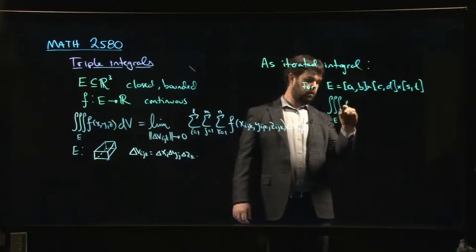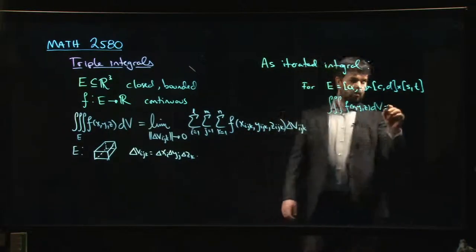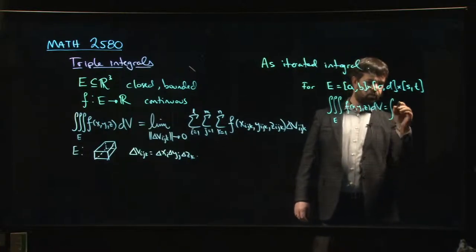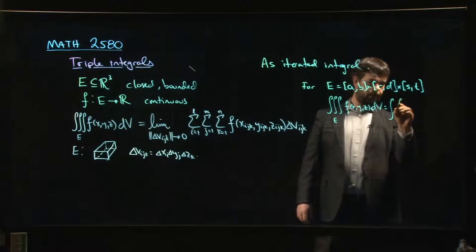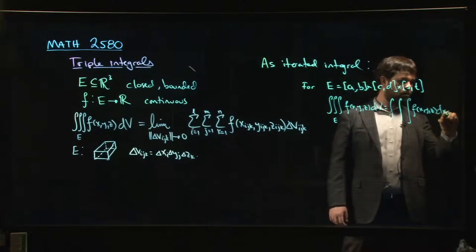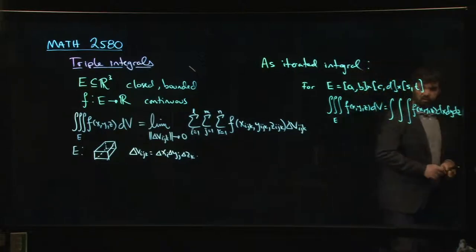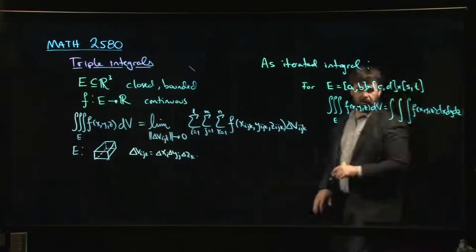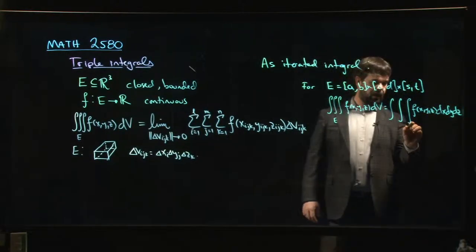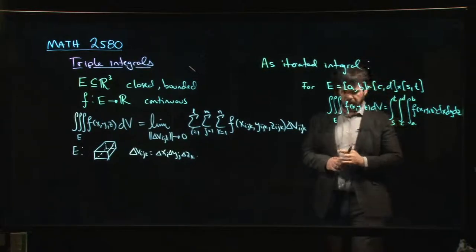Then we're going to have something that looks like this triple integral, F of X, Y, Z. We could write this as, well, we can do whatever order we want. So let's say we choose to do X, then Y, then Z. I hope that fits. That's just barely fitting. Well, if we're doing X first, X goes from A to B, then Y, Y goes from C to D, Z, well, Z goes from S to T.